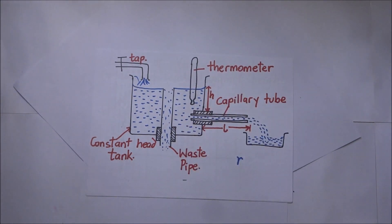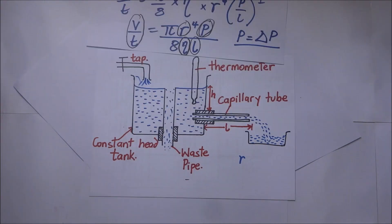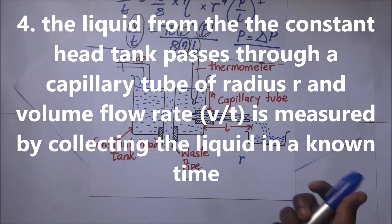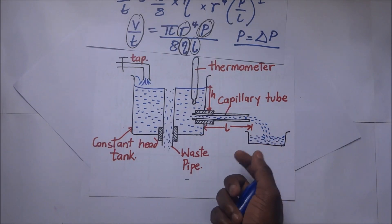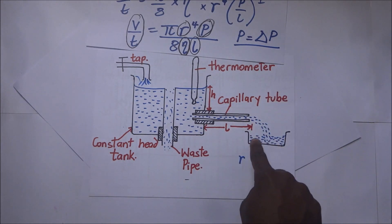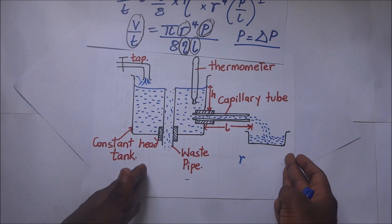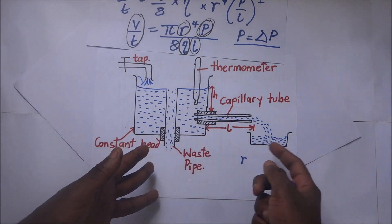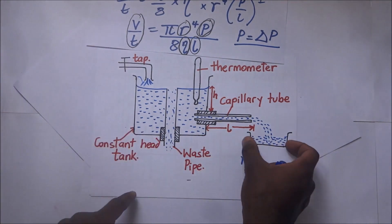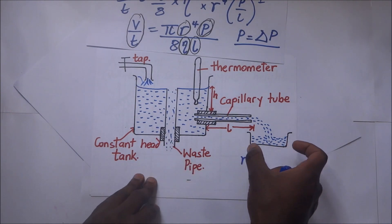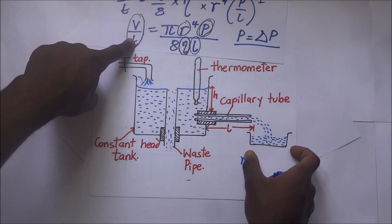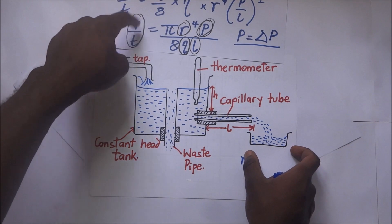To get started with the experiment, we need to find the volume flow rate V/T. This is obtained by collecting the liquid over a timed period T. You use a stop clock and measure a specific amount of time — say one minute — then measure how much volume of liquid has flowed in that time. Divide the volume by the time to get the volume flow rate.